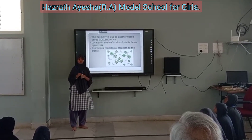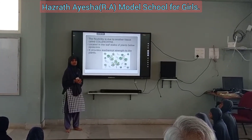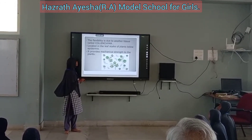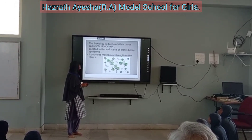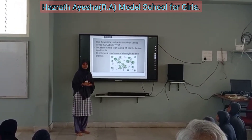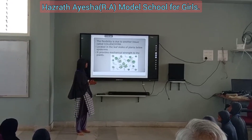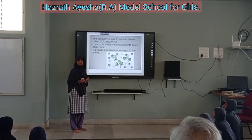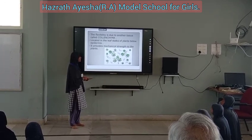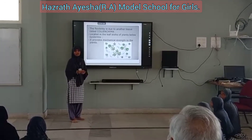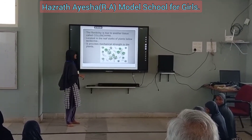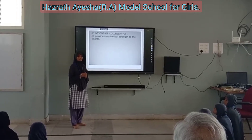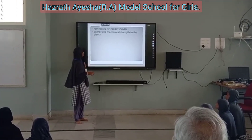Do you know which tissue is responsible for the flexibility of a plant? That tissue is called collenchyma. Collenchyma is present below the epidermis and located in the leaf stalks of a plant. The best example of collenchyma is the stem of a composite plant.